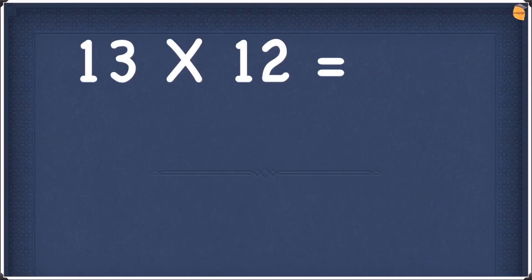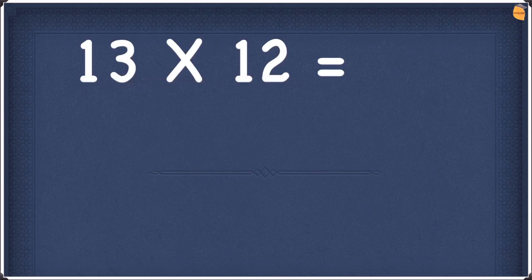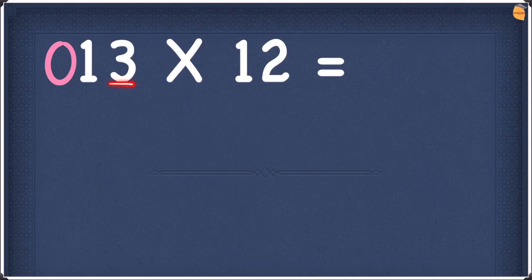Our first example is 13 times 12. Before we do anything, we are going to add a 0 in front of the 13. Now we have two steps to follow: the first step is to double the number, and the second step is to add that doubled number to the next number on the right hand side.